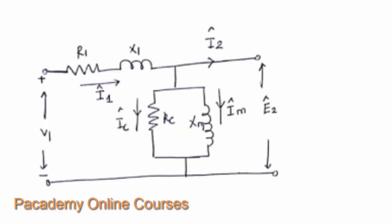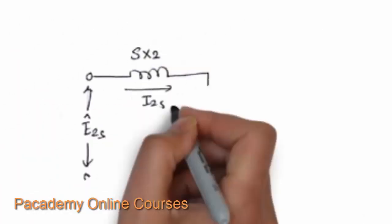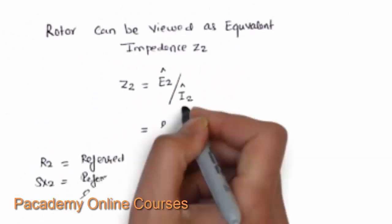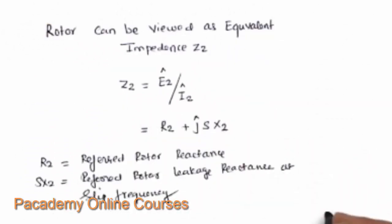I2 is the current flowing into the rotor and E2 is the voltage induced in the rotor circuit. The rotor circuit at running state has E2S as the induced voltage, SX2 as the rotor reactance, R2 as the rotor resistance, and I2S as the running-state current. The voltage induced in the rotor is S times the equivalent voltage available at the stator, since slip reduces the voltage by some amount.